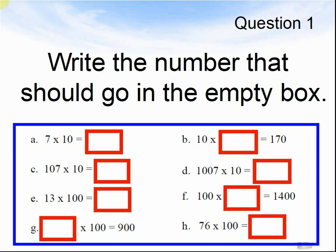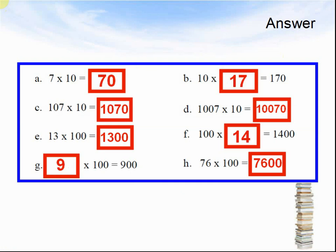The answers are: a. 7 x 10 equals 70. b. 10 x 70 equals 170. c. 107 x 10 is 1,070. d. 1,007 x 10 equals 10,070. e. 13 x 100 equals 1,300. f. 100 x 14 equals 1,400. g. 9 x 100 equals 900. h. 76 x 100 equals 7,600. Let's look at the next question.